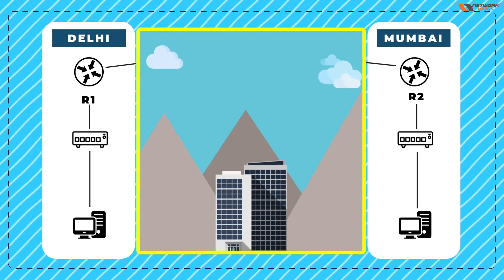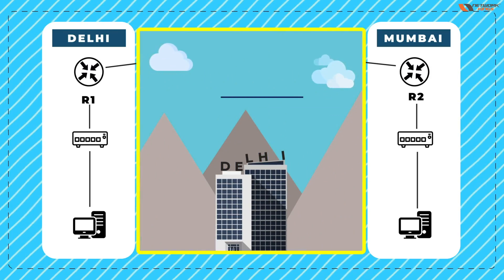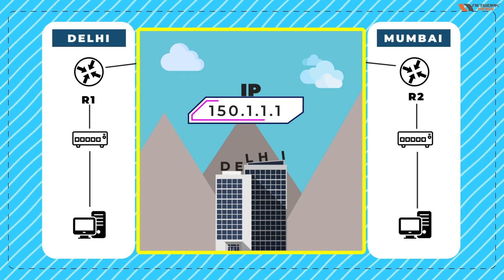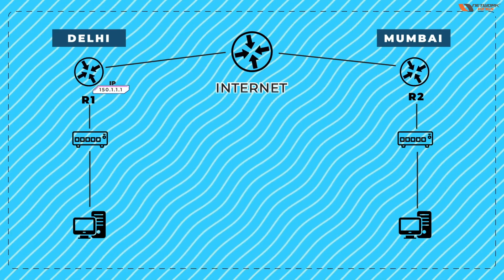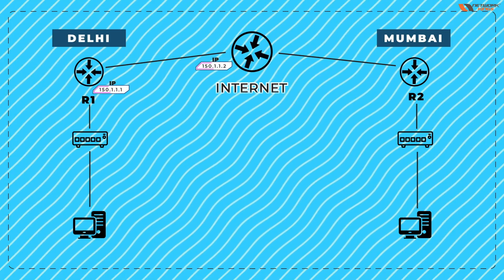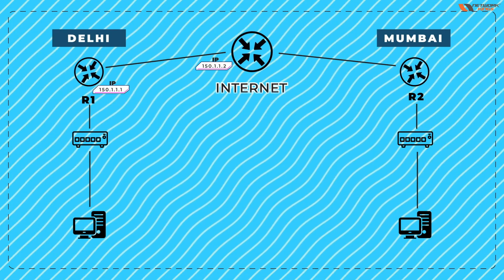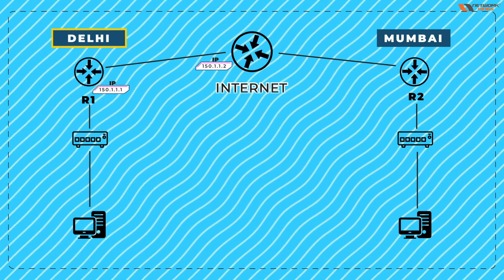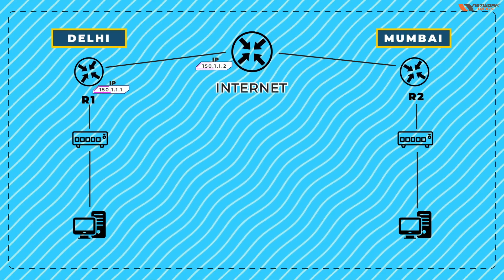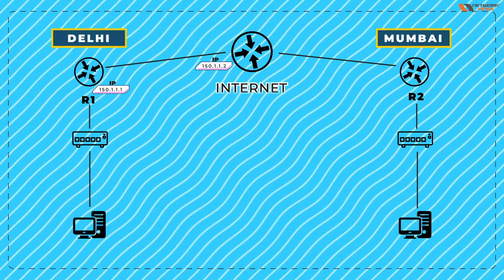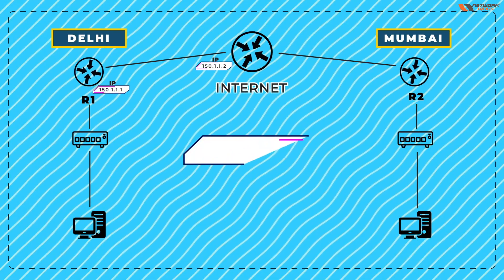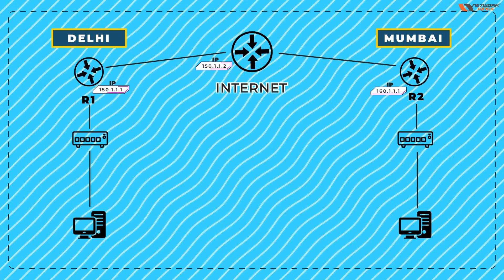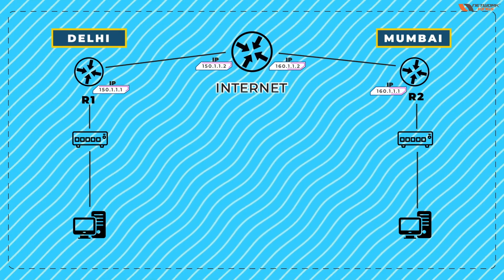Suppose when you take the internet connection in Delhi, you get an IP like 150.1.1.1. We are going to apply this IP on this side, and the ISP will have another IP on the other end. Similarly, you have taken the connection in Mumbai as well. Mumbai will also get an IP with a subnet, and when connecting to the internet from Mumbai, the ISP will also have some IP on their side.